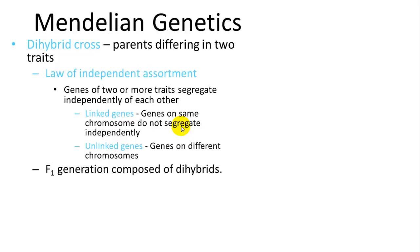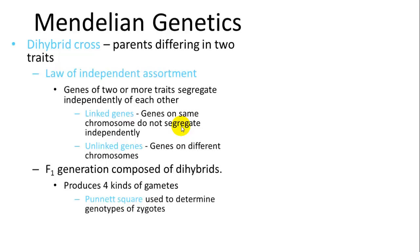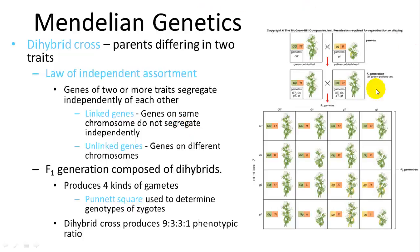In an F1 generation composed of dihybrids, four different types of gametes are produced depending on whether they carry recessive-recessive, dominant-recessive, dominant-recessive (flipped), or dominant-dominant combinations. Using the Punnett square to determine genotypes and phenotypes, the phenotypic ratio should be 9 to 3 to 3 to 1 if you have heterozygote F1 offspring making the F2 offspring.